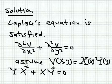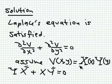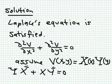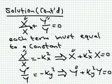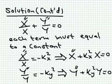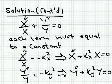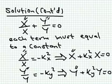The next step is to divide by the product X·Y. This gives X''/X + Y''/Y = 0. Because these two functions are independent of one another, each term must be equal to a constant. Since they sum to zero, one constant must be positive and the other negative.